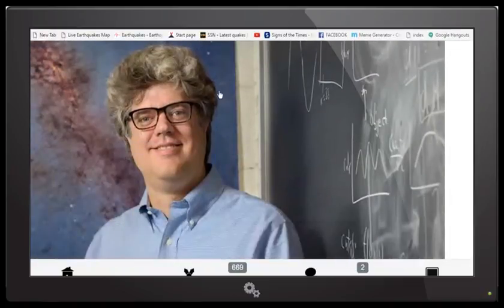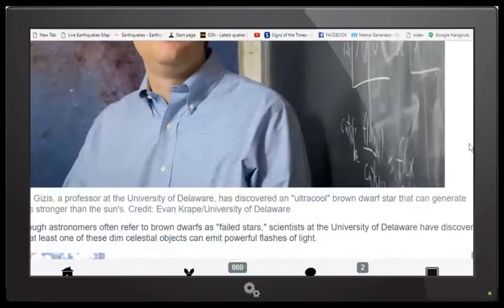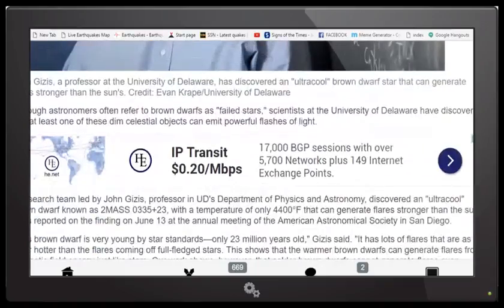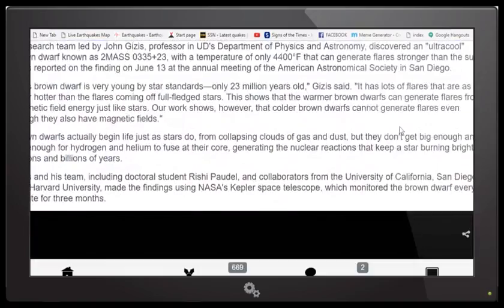This looks like this would be Astro Boy's big brother. Sorry about that, but anyways, this guy's a professor at the University of Delaware, and he's uncovered and discovered an ultra-cool brown dwarf star that can generate flares stronger than the sun's. He discovered it. He proved it. Now, it states that although astronomers often refer to brown dwarfs as failed stars, scientists at the University of Delaware have discovered that at least one of these dim celestial objects can emit powerful flashes of light. Once again, boom, that's in your face.